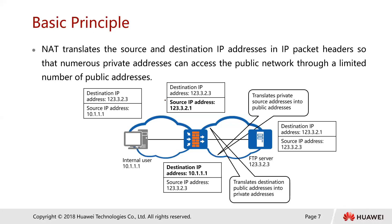Looking at the basic principle of NAT: network address translation translates the source and destination IP addresses in packet headers so that numerous private addresses can access the public network through a number of public addresses — or even through one public IP address. Here is an illustration: you have your destination IP address 123.3.2.3 — this is the IP of the FTP server you want to send to. The source IP is 10.1.1.1 — which is Class A.